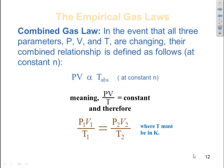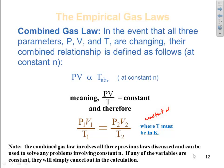Once again, temperature must be in Kelvin, and we are talking about constant number of moles. Note, the combined gas law involves all three previous laws discussed and can be used to solve any problems involving constant n. If any of the variables are constant, they will simply cancel out in the calculation.